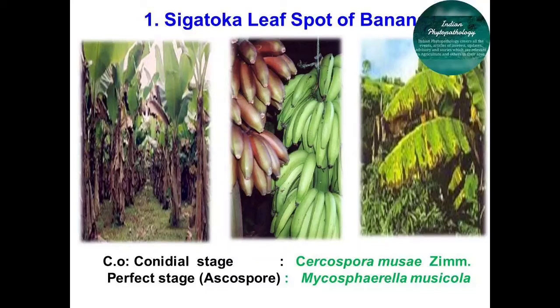In severe infection, Sigatoka also affects the photosynthesis process of the banana crop, which is drastically reduced due to defoliation, resulting in premature ripening of banana fruits. This is one of the most economically important diseases of banana crop. A key character is that the spots on leaves are always spindle-shaped and seen in a chain formation.